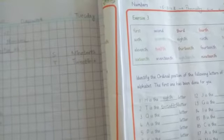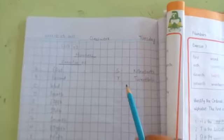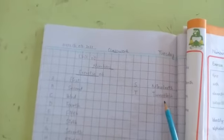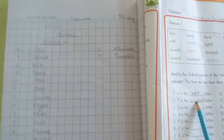The first one is H, which is the 8th letter. This has been done for you. The next one is T. What is the position of T? Here is T, and the ordinal position of T is 20th. So you can easily write here that T is the 20th letter.